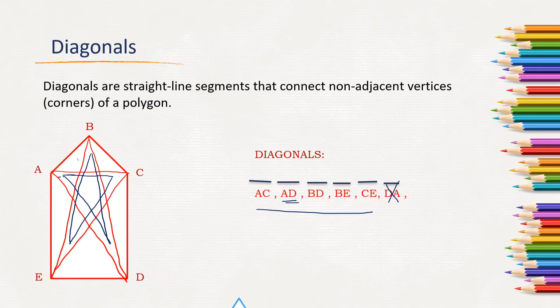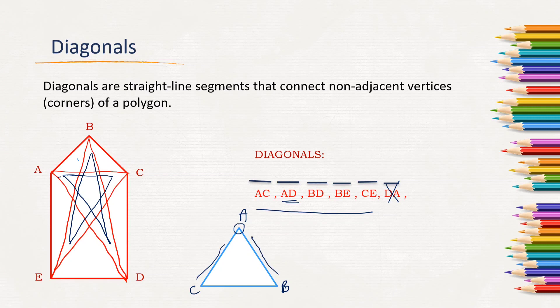Now look at this figure — can we find a diagonal for a triangle? No, because all the vertices share sides. For example, with vertices A, B, and C: for A, both B and C are already connected by sides. For B, both C and A are connected. For C, both B and A are connected. So there cannot be a diagonal for a triangle. Except for a triangle, for all other polygons we can find diagonals.